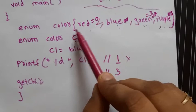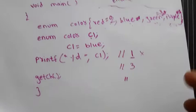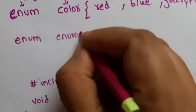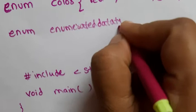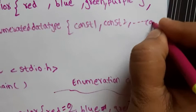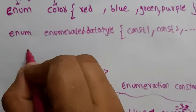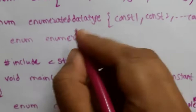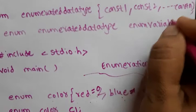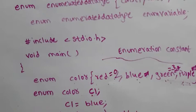The main purpose of enumerated data types is to create your own data type with integer constants — you can create constants for anything. The syntax is: enum followed by your data type name, then list your enumeration constants inside curly braces. To declare a variable: enum, then the data type name like color, then the variable name like c1. I hope you got the idea.